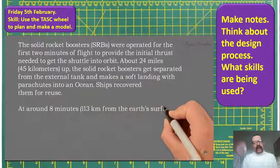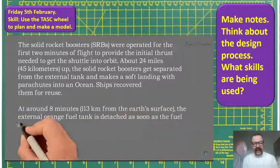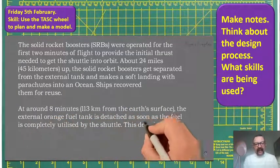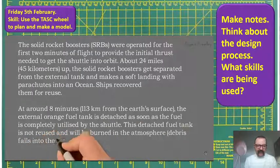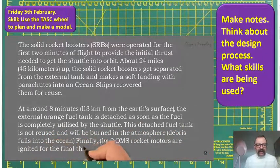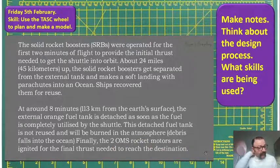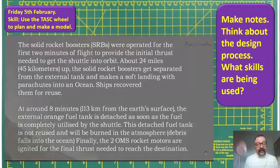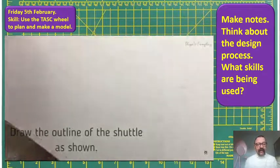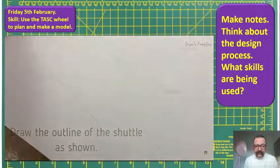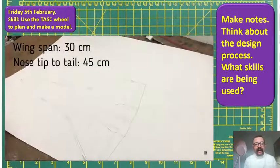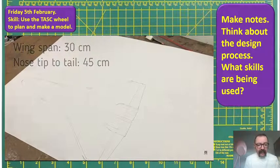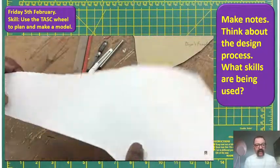We were talking about Richard Branson and his space tourist programme. Richard Branson's shuttle is very much like the shuttle we've just seen, or what this model represents. It's designed to come back to Earth. You might want to have a look at one of Richard Branson's shuttles and base your design on that.